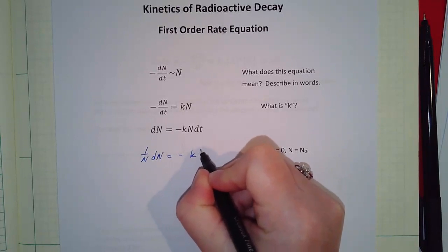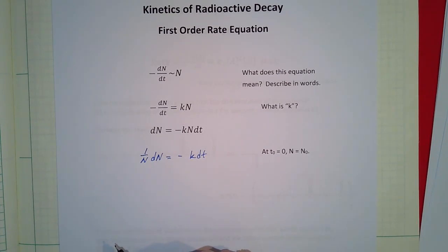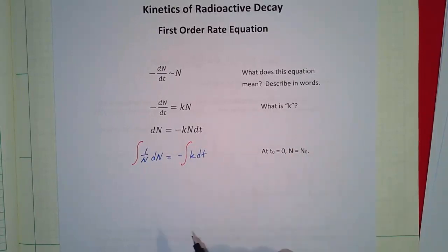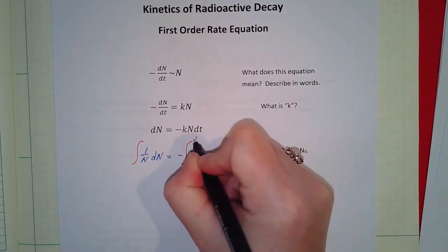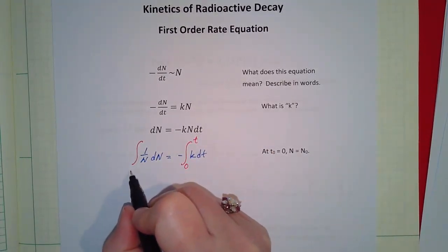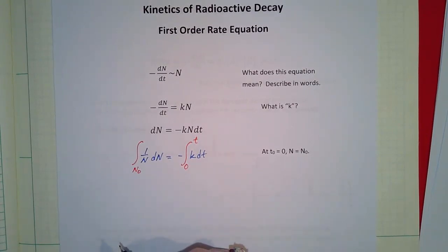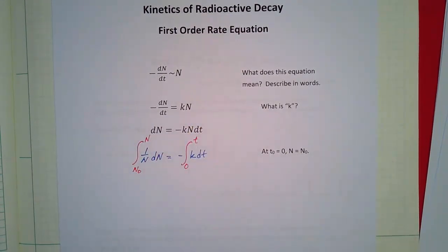Okay, so now we need to integrate this and often the hardest part of the integration is figuring out what the limits are. So we're going to integrate both sides and the time is usually pretty straightforward. Usually we're going from t equals zero to some time t.